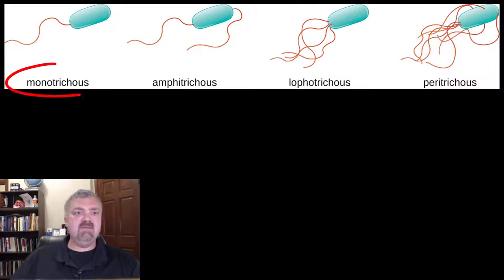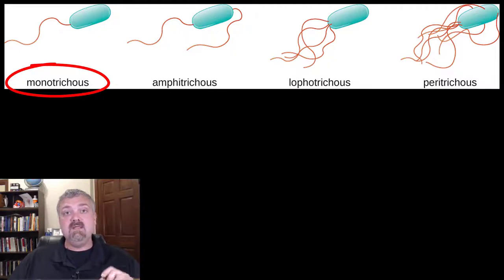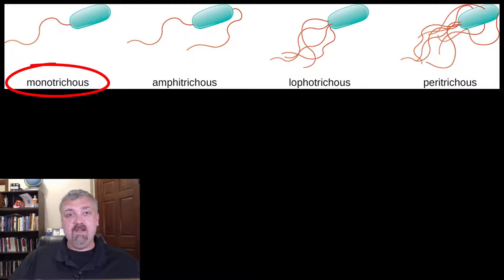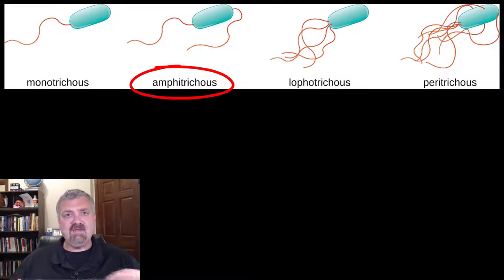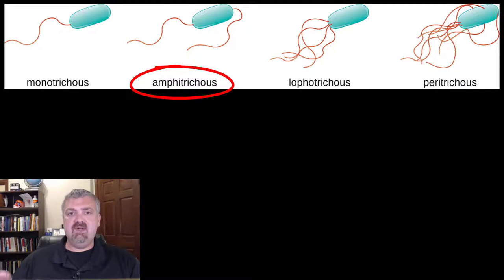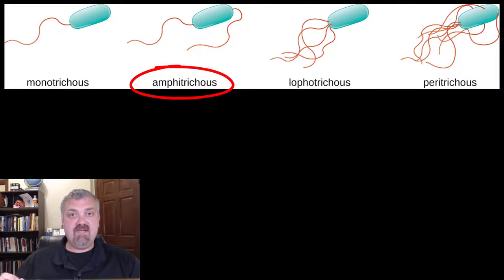The first group here is monotrichous — that's a single flagella on one end. Then amphitrichous: 'ampha' means both. I think of amphibians, how they can live on water and land. So amphitrichous means you're going to have flagella on both ends — you can have one or several — flagella on both poles, on both ends.